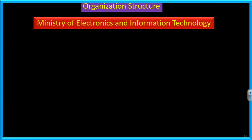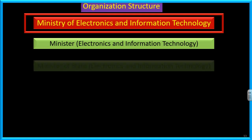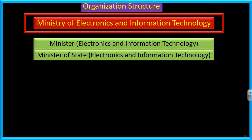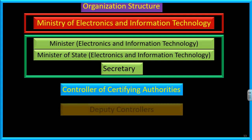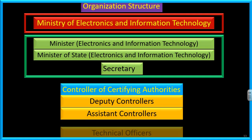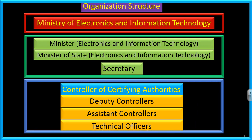Yahan par mein aap ko ek organization structure de raha hoon. At the top we have the Ministry of Electronics and Information Technology. Is ministry ke andar hamaare paas Minister of Electronics and IT hai, then Minister of State for Electronics and IT, then a Secretary. Yeh ministry ke level ke vyakti hain. Then we have the Controller of Certifying Authorities, then deputy controllers, then assistant controllers, and then technical officers. Controller of Certifying Authority the Ministry of Electronics and Information Technology ke under kaam karta hai.